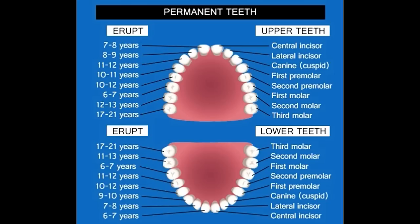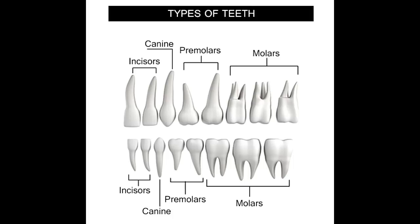Premolars, which are also called bicuspids, are located next to the canines. These are only present in the permanent dentition, which means that children don't have premolars. The first premolars are located next to the canines; in the upper dental arch, the first premolars have two roots, while the other premolars have one root only. Next to the first premolars lie the second premolars, which are also used for grasping food. They have two cusps on the biting area for tearing and crushing food.